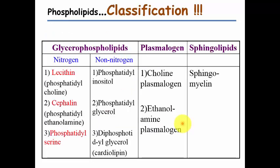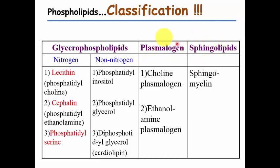Now we go to the classification of phospholipids. Phospholipids are mainly classified on the basis of the alcohol present. One is glycerophospholipid, which contains glycerol as an alcohol, and the second is sphingolipids, which contains sphingosine as an alcohol. There is also plasmalogen, which is a variant of glycerophospholipid. Glycerophospholipids are further classified as nitrogenous and non-nitrogenous glycerophospholipids.